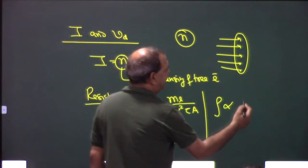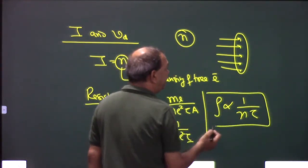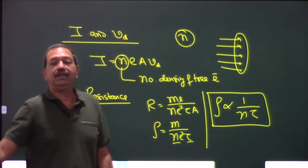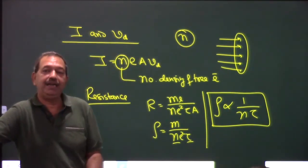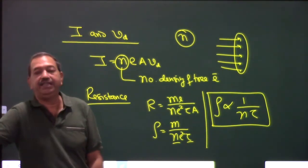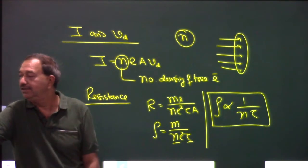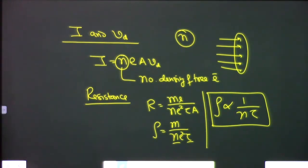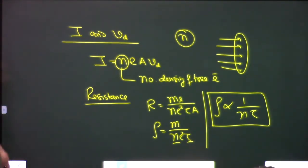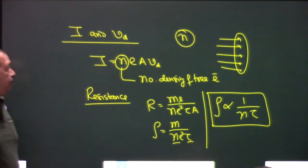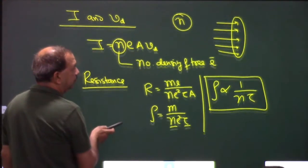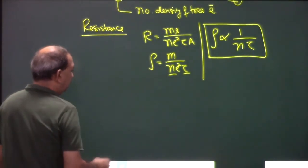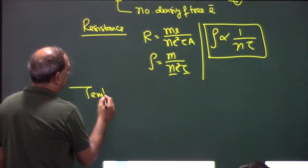Resistivity is inversely proportional to n and τ. It depends on the material and physical conditions of the material. Physical conditions include temperature.